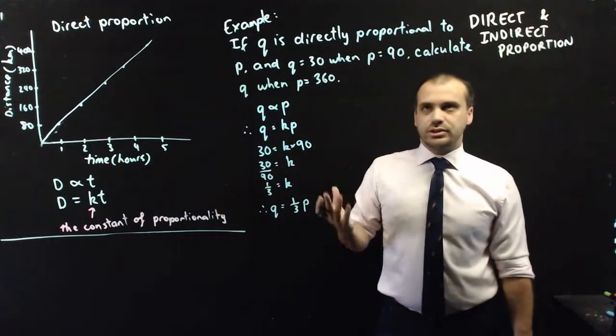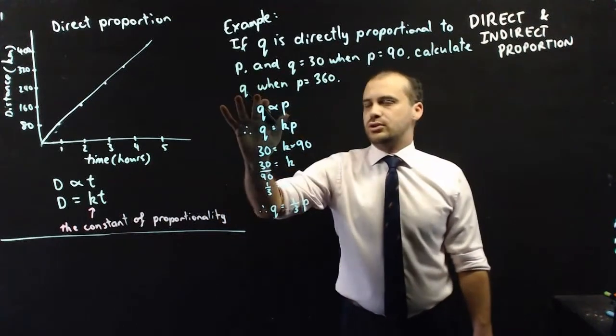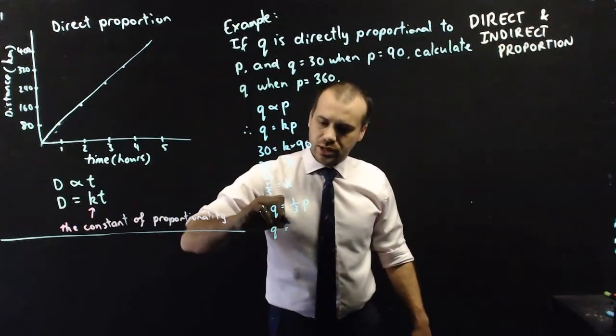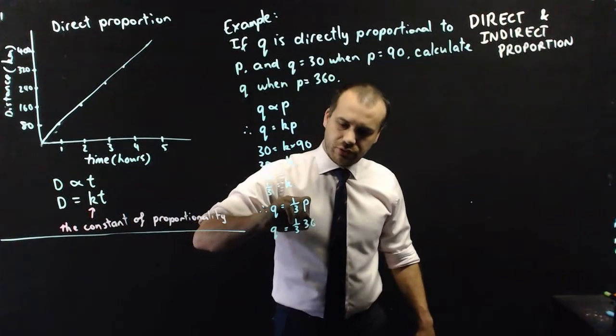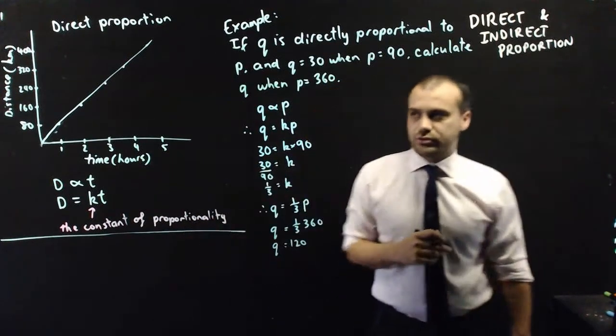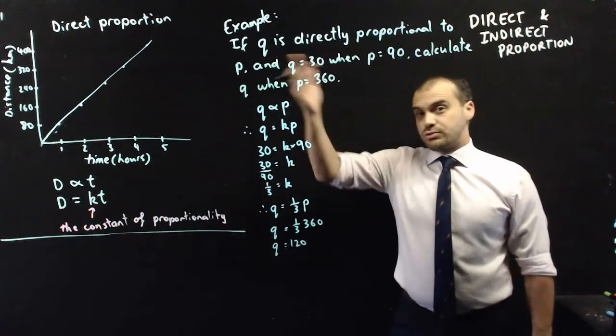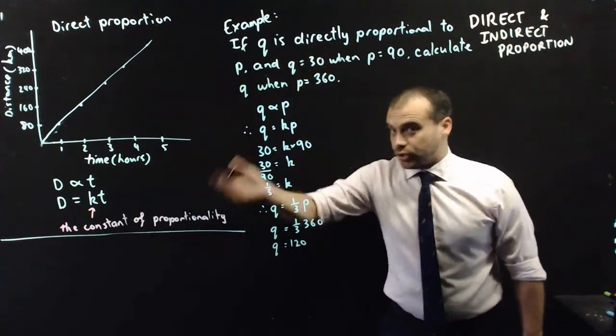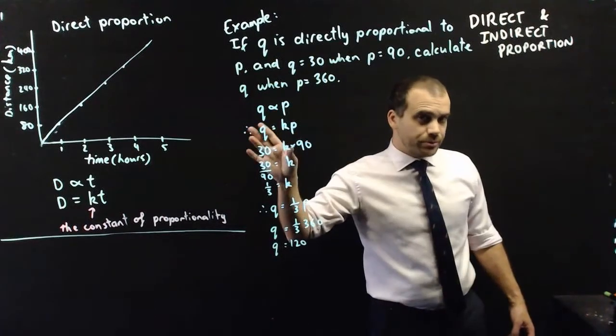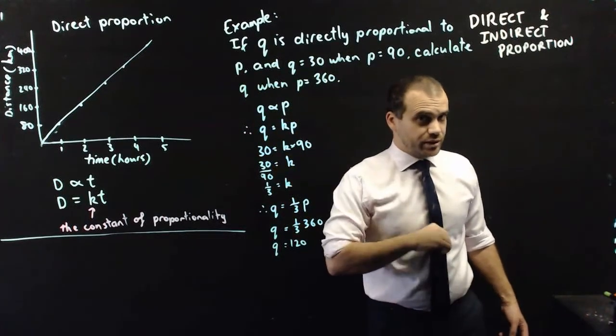And now it's relatively straightforward. Calculate q when p equals 360. So, q equals 1 third of 360, q equals 120. Now, that is direct proportion and the constant of proportionality in action. But when it comes to direct proportion, it doesn't have to be a straight line.